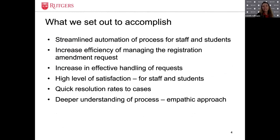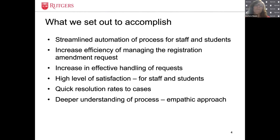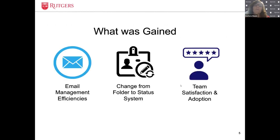Thanks, Danielle. Let's start by putting some context around what we set out to accomplish. We're looking to streamline our students' appeals process so that students' needs can be resolved as quickly as possible. In addition to that priority goal, we also looked to address satisfaction and resolution rates. Now that you know what we set out to accomplish, let's take a look at what was gained. Here are three efficiency gains to share.